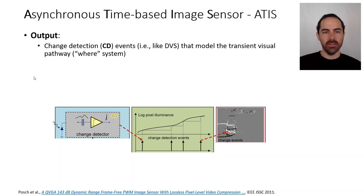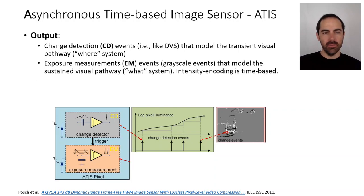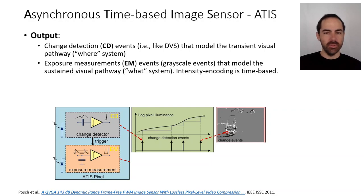The ATIS has another type of events called exposure measurement events. These are grayscale events that model the sustained visual pathway, and intensity is encoded in time.